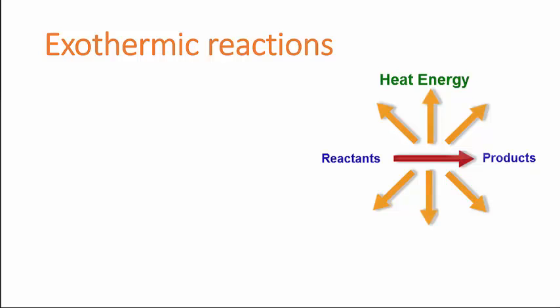If you have a look at the diagram on the right-hand side here, an exothermic reaction is one that releases heat or energy in the form of heat as the reaction carries on from reactants to products. So in an exothermic reaction, if we observe the temperature, we should see an increase in the temperature of the surroundings. Energy or heat has been released to the surroundings and we observe this increase in temperature as a result.